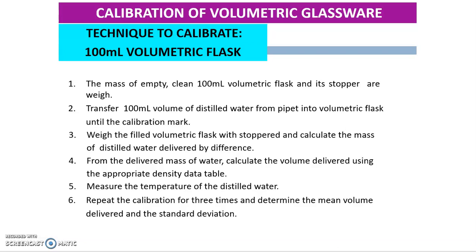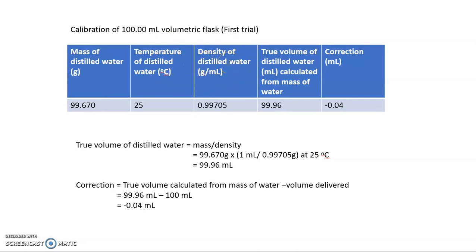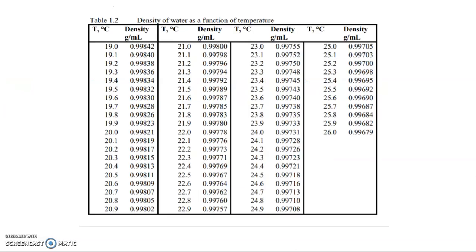Here is the example of the data. This is the mass of distilled water that you have weighed using the analytical balance. Then, this is the temperature of the distilled water, and this is the density of the distilled water. We get the density of the distilled water based on this table.